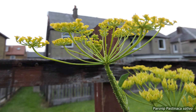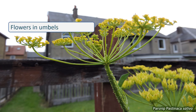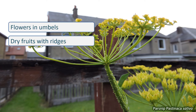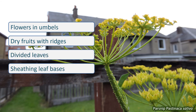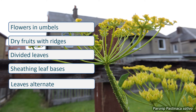So, a plant with whitish or yellowish flowers arranged in umbels, that develop into dry fruits with ridges, and which has divided leaves with sheathing bases that alternate up the stem, will probably be a member of the Apiaceae family.